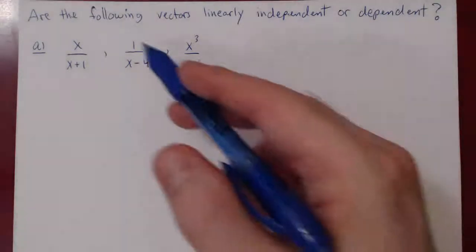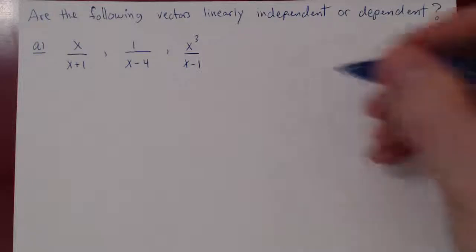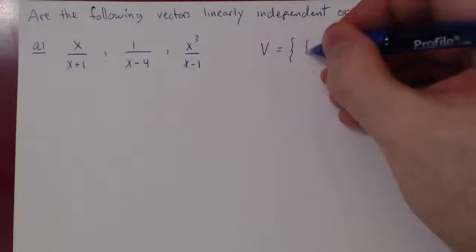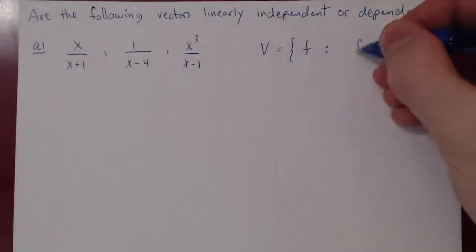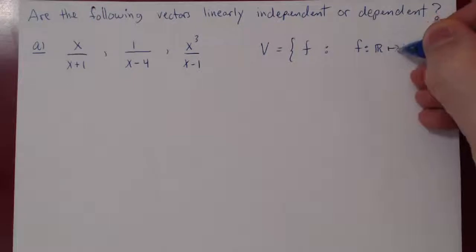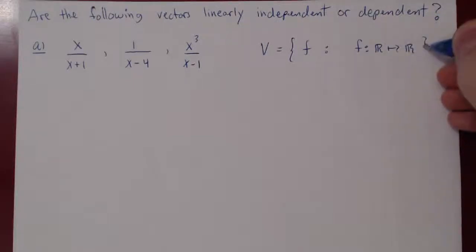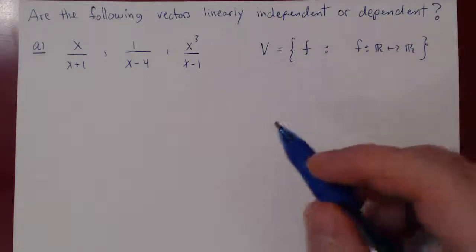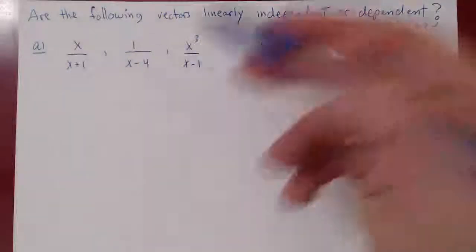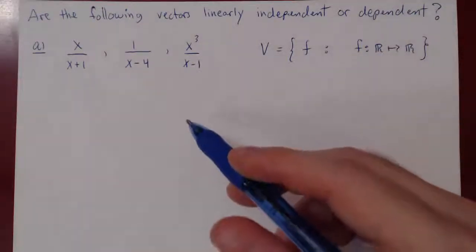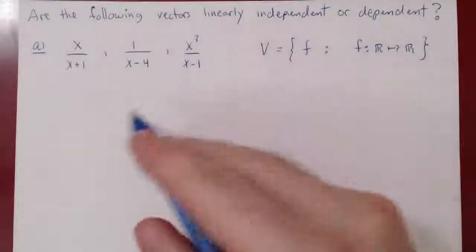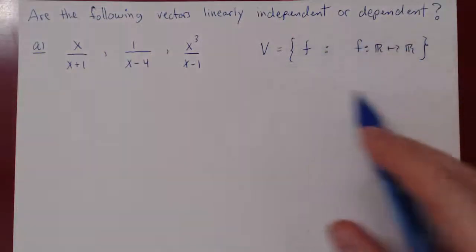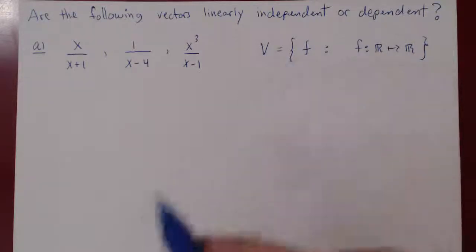Our vector space can be taken as the space of all functions — we can call this V, where f is a function from the real numbers to the real numbers. If you take all functions from the reals to the reals, you have a vector space, and clearly rational functions are functions. So we can think of these three rational functions as vectors, as they are elements of the large vector space that contains all real functions.